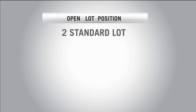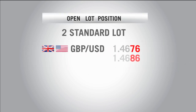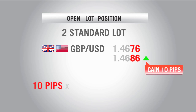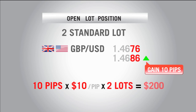For example, if we opened a 2 standard lot position on the pound dollar and we gained 10 pips, we would take those 10 pips and multiply it by $10, and then by 2 lots, and we would have made a $200 profit.